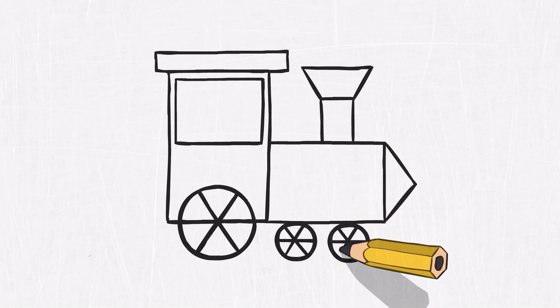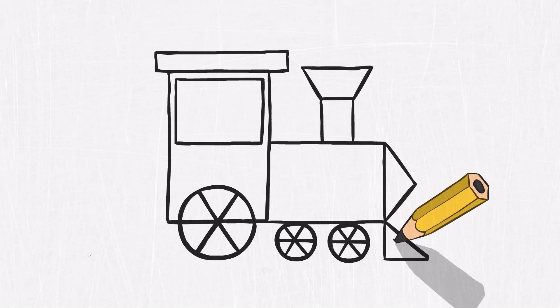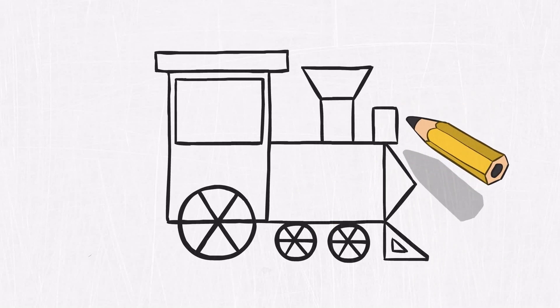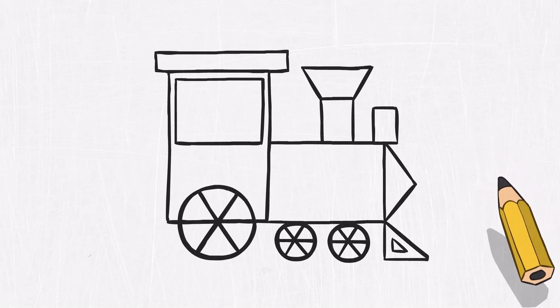We need another triangle in front. And a small one inside it. To protect the wheels. Finally, let's draw a small rectangle, a lamp to light the way. The locomotive is ready!